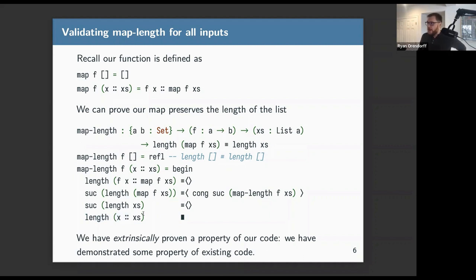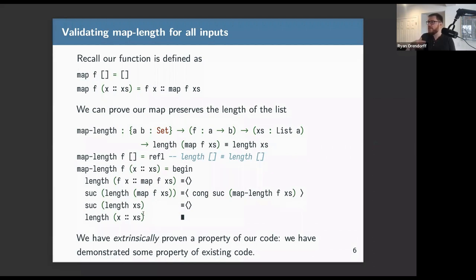We've now proved a property about our program extrinsically — the code already existed without any dependent types, and we've proved a property about it. That's quite powerful: you can take existing code, convert it into Agda syntax, prove properties about it, and then use the Agda version going forward. Eventually they want to make a tool that helps make that conversion easier.